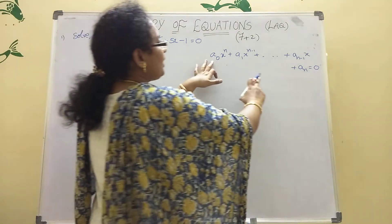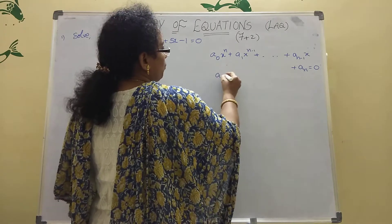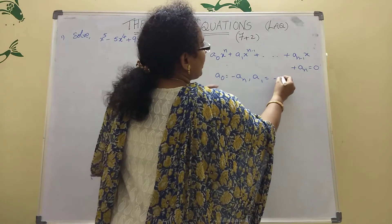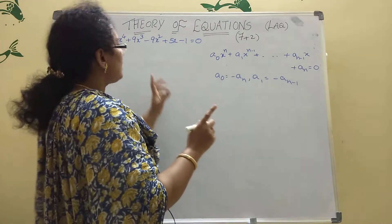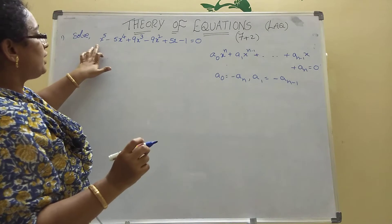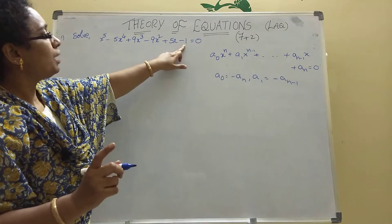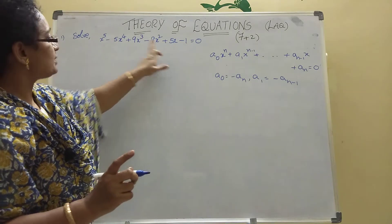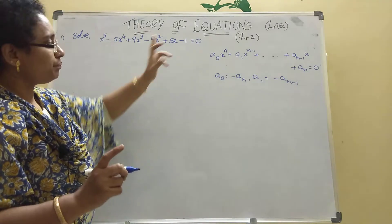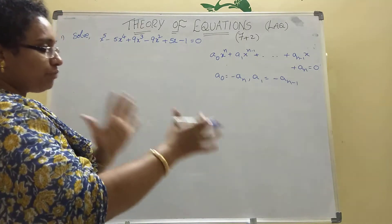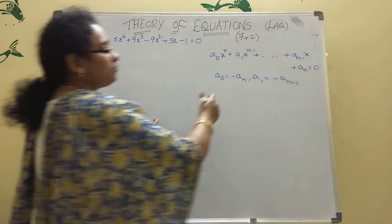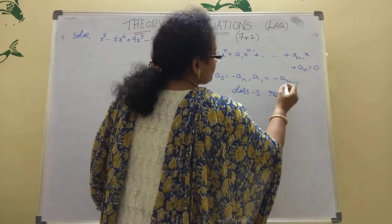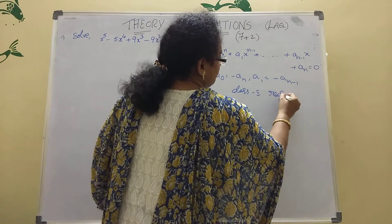Now, suppose if A₀ = -Aₙ and A₁ = -Aₙ₋₁ like that — see our expression is like that only. A₀ equals what? Minus Aₙ. A₁ equals minus Aₙ₋₁. It will be minus-minus = plus. Then that time this is called Class 2 — Class 2 reciprocal equation.